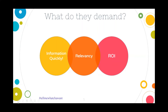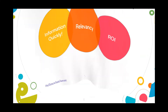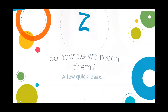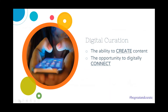So how do we reach them? This is just a few quick ideas — there's so much you can do, and I could probably do an eight-hour training on generational teaching because I love it so much. Here's just a few ideas to get your brain going. First is digital curation — I've spoken about this at four or five different conferences. Digital curation is the ability to create content — the opportunity to digitally connect to things.